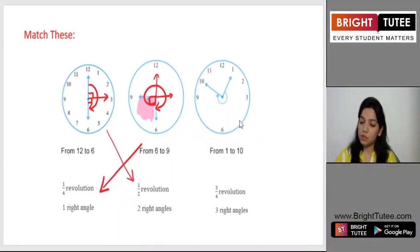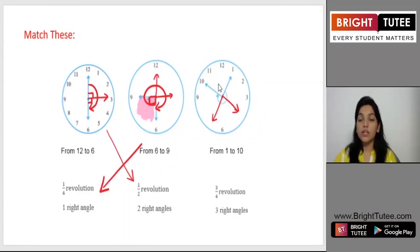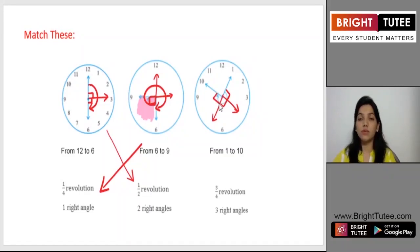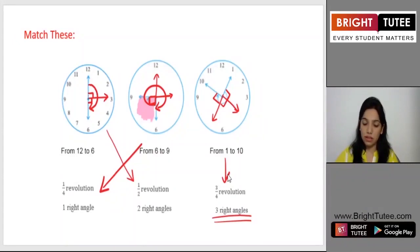Now the last image: starting from 1 and reaching till 10. Can you tell me how many right angles have been moved? The answer is 3 right angles, and this is three fourths of a revolution. So this is the correct match for these three images.